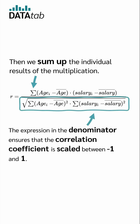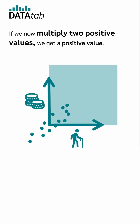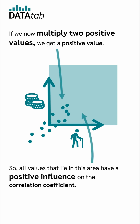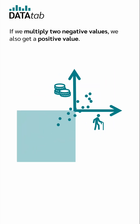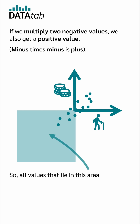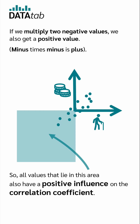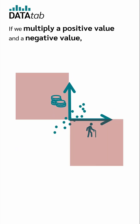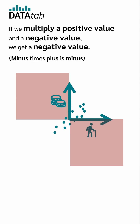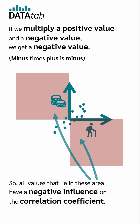The expression in the denominator ensures that the correlation coefficient is scaled between minus 1 and 1. If we multiply two positive values, we get a positive value, so all values that lie in this area have a positive influence on the correlation coefficient. If we multiply two negative values, we also get a positive value — minus times minus is plus — so all values in this area also have a positive influence. If we multiply a positive value and a negative value, we get a negative value — minus times plus is minus — so all values in these ranges have a negative influence on the correlation coefficient.